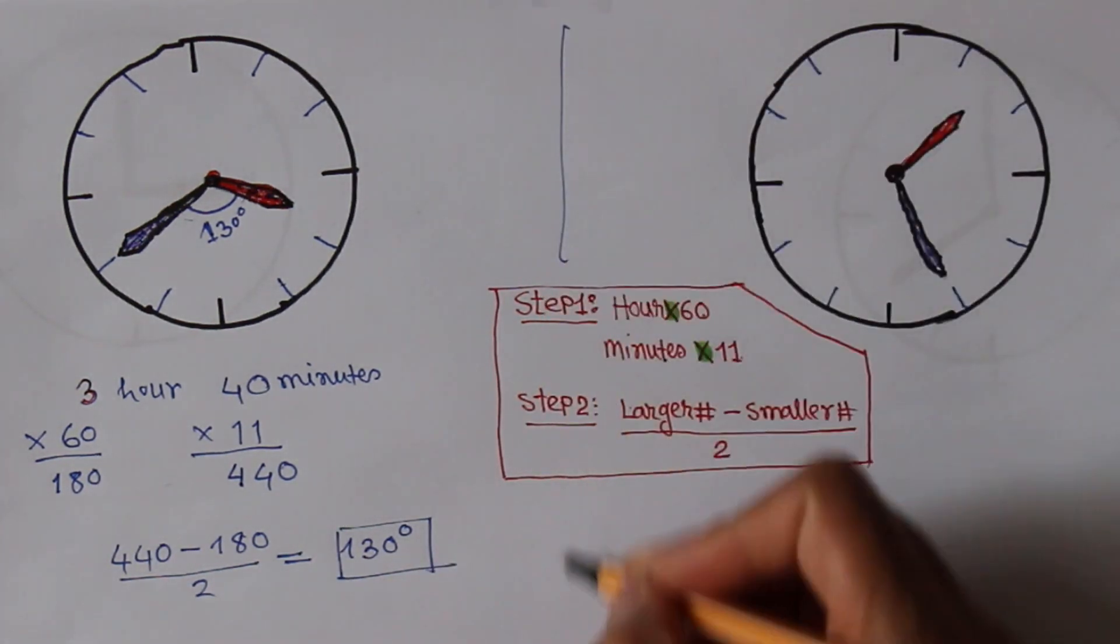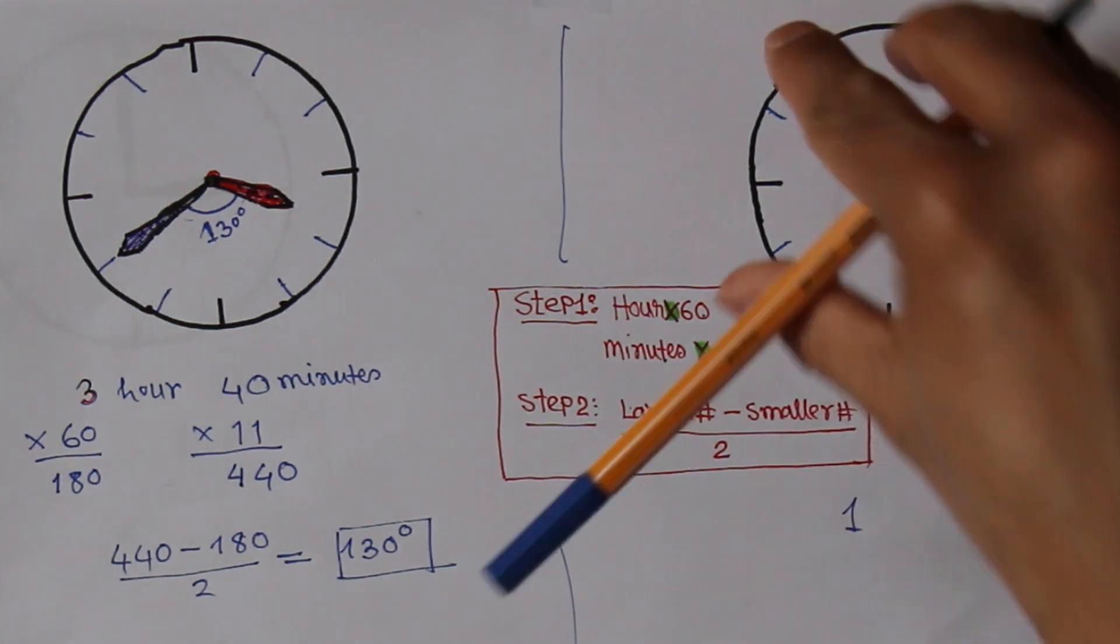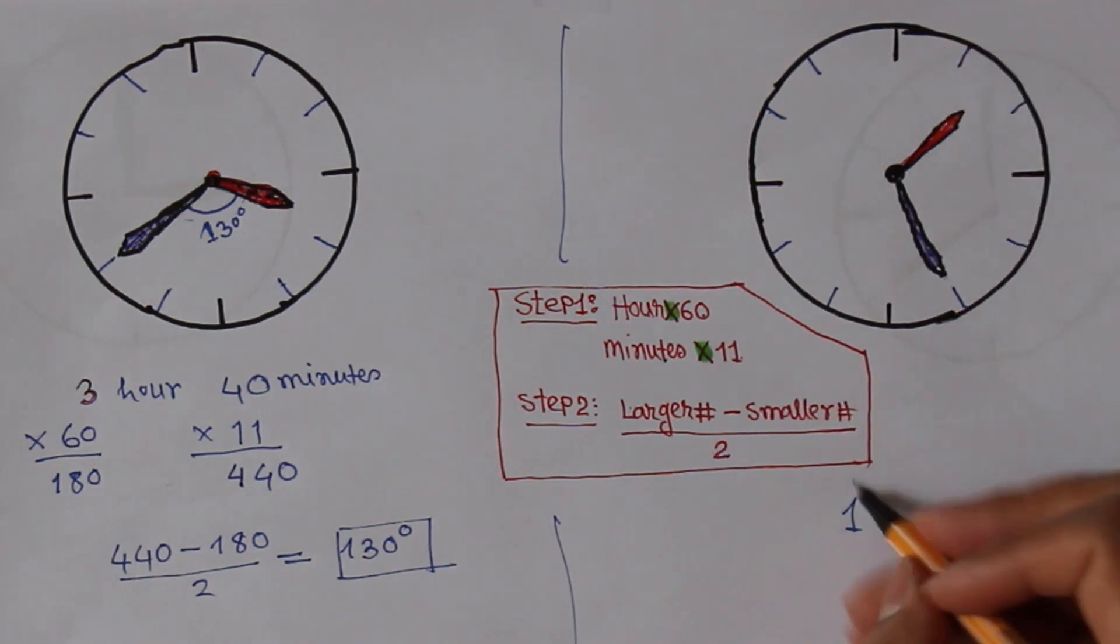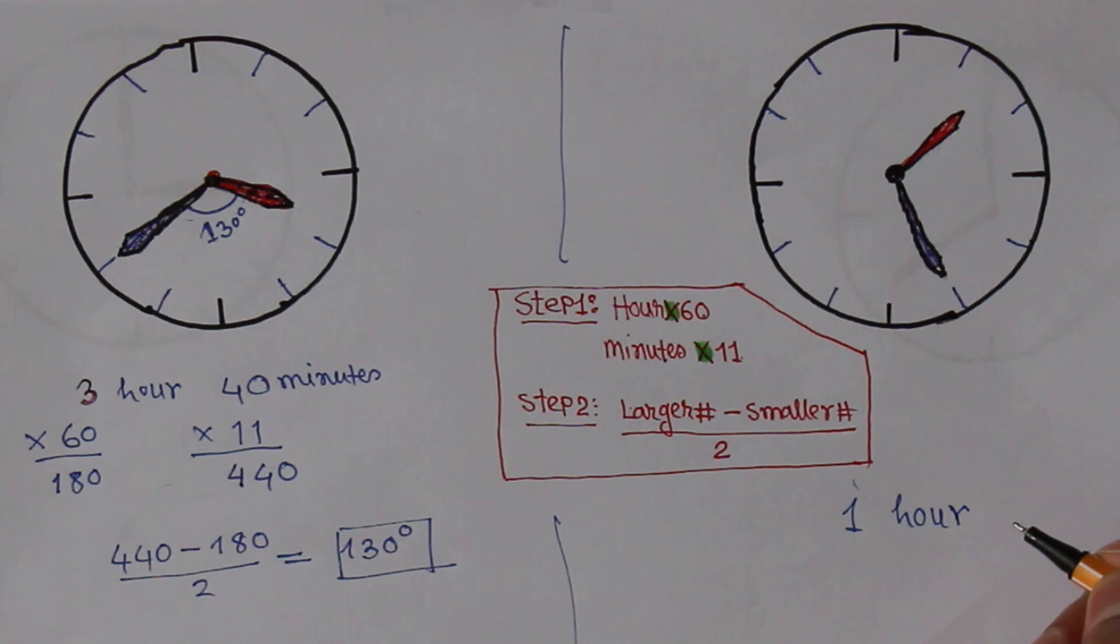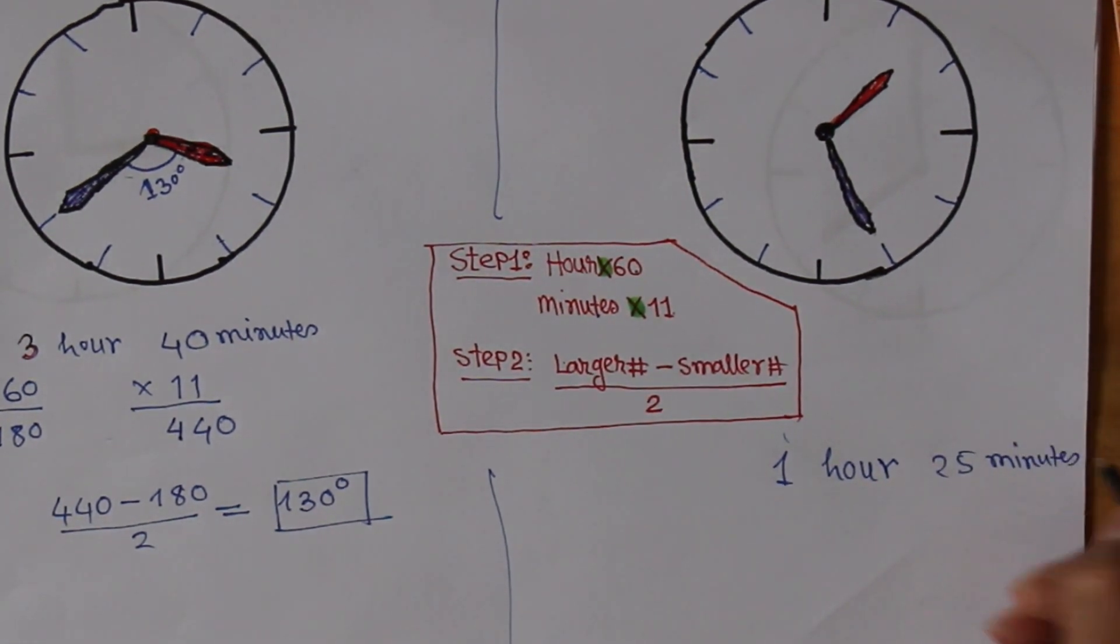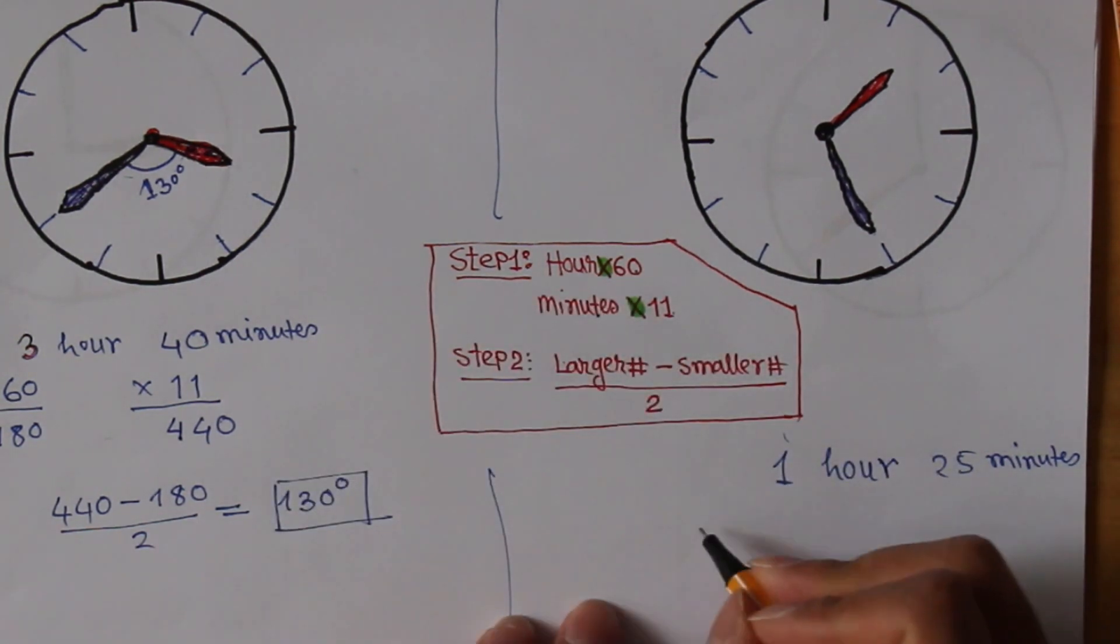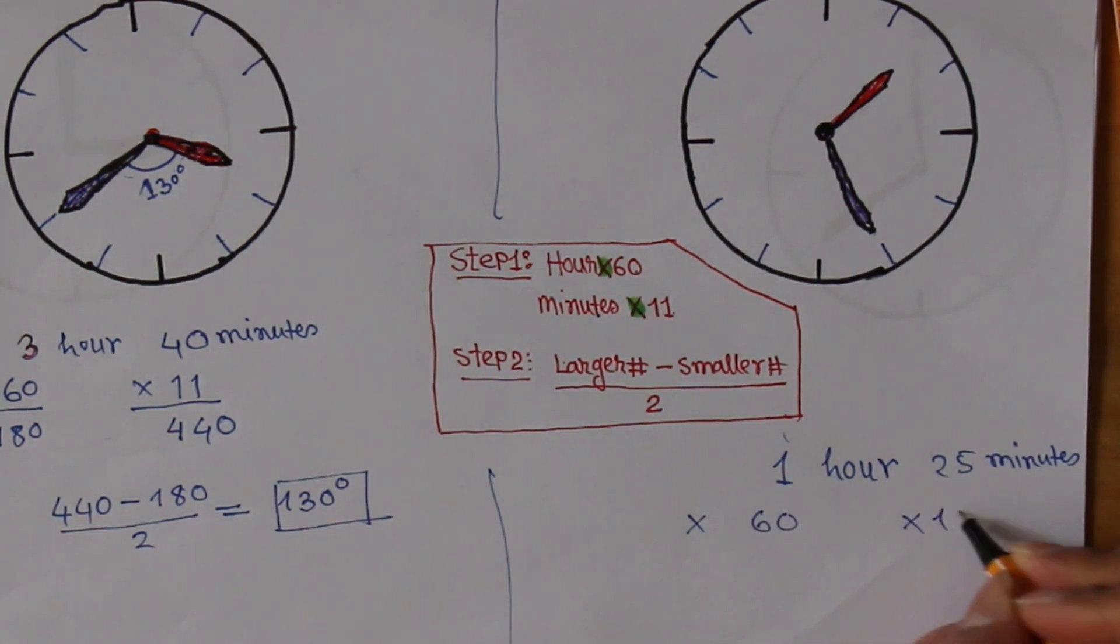Let's consider the second case. This clock is showing 1 hour and 25 minutes. According to this formula, multiply the hour by 60 all the time and multiply the minutes by 11 all the time. So, 60 times 1 is 60 and 11 times 25 is 275.